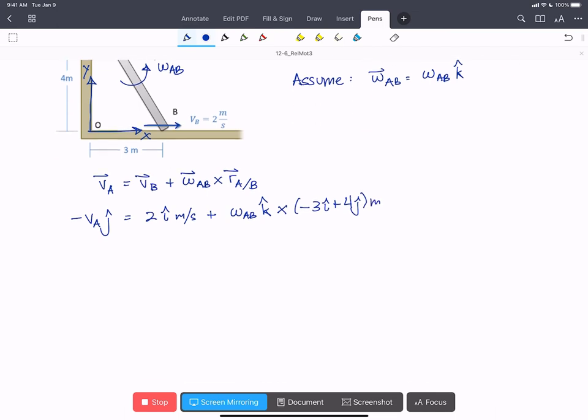So we're going to do out that cross product. We end up with minus VA on the left equals 2 meters per second in the i-hat. Oops. Minus 3 omega AB in the j-hat minus 4 omega AB in the i-hat because of course k cross j is minus i.